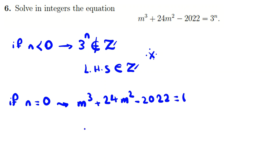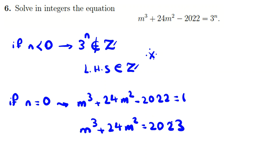An important idea when working with integers is to take all terms to one side. Let me also mention: it's useful to memorize the prime factorizations of 2022, 2023, and 2021, since these numbers appear frequently in competition problems related to current years.